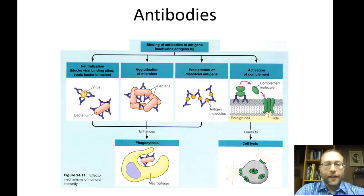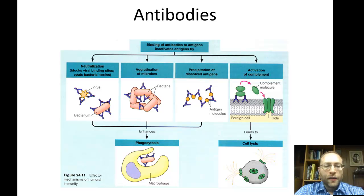Here are the ways antibodies can attack pathogens. They are specific — they only attack things that have the correct antigen; if something isn't the correct one, they ignore it. Neutralization: antibodies bind to the virus or bacteria and block the sites that allow the pathogen to function and enter the cell, just blocking up those areas.